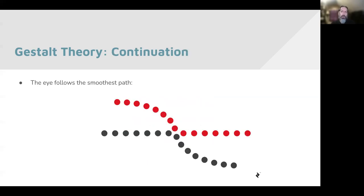Continuation: the eye tends to follow the smoothest path. Even though we have two different colors of dots, you perceive a straight line and a curved line that intersect. You could imagine those as two lines kinked in the middle, but our brains tend to follow the intersecting path — following the two different smooth curves or straight lines.